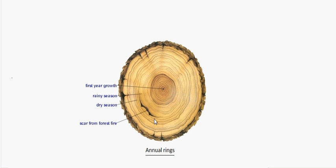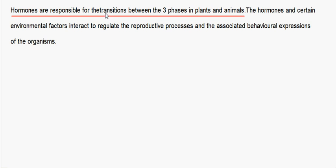This is the annual ring of a plant. Each ring represents the growth during one growth period, so by counting these annual rings you can identify the age of the tree. The number of annual rings in the oldest part of a cut stem corresponds to the age of the tree in years. Hormones are responsible for the transitions between the three phases in plants and animals. The hormones and certain environmental factors interact to regulate the reproductive processes and the associated behavioral expression of the organisms.